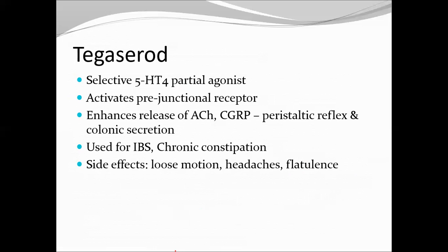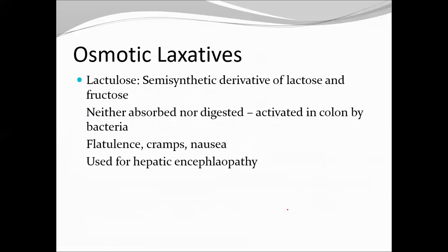Tegaserod is a selective 5-HT4 partial agonist that activates the pre-junctional receptor, thereby enhancing the release of acetylcholine and calcitonin gene-related peptide, increasing the peristaltic reflex and colonic secretion. It is mainly used for irritable bowel syndrome and chronic constipation. Side effects include loose motions due to increased peristalsis, headaches, and flatulence.